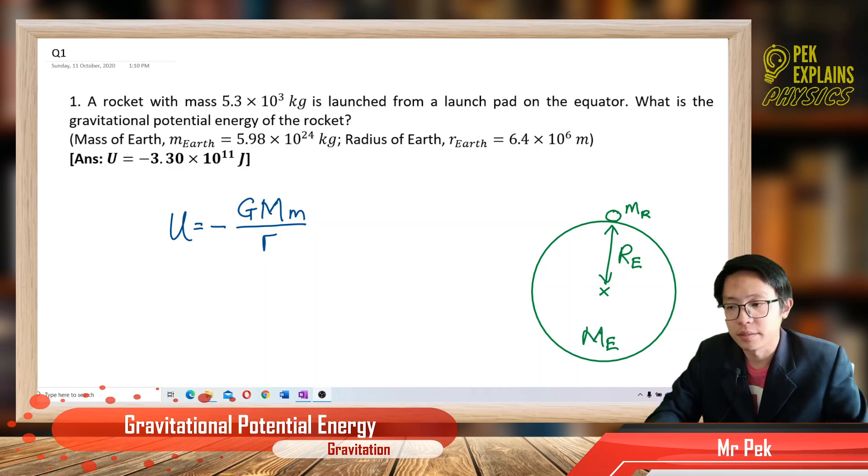Alright, welcome back. This is our first question in gravitational potential energy. A rocket with mass 5.3 times 10^3 kilograms is launched from a launch pad on the equator. What is the gravitational potential energy of the rocket?